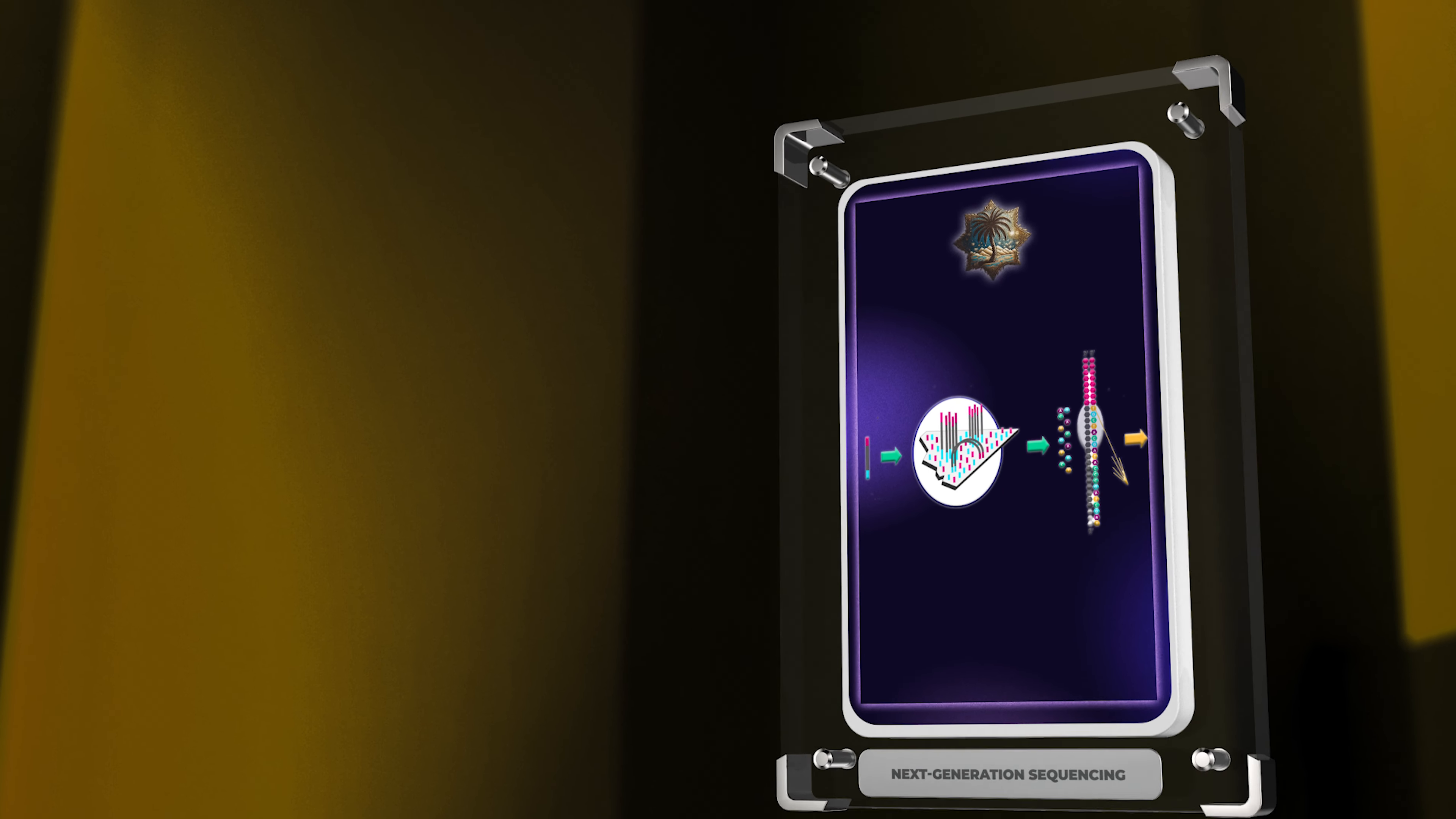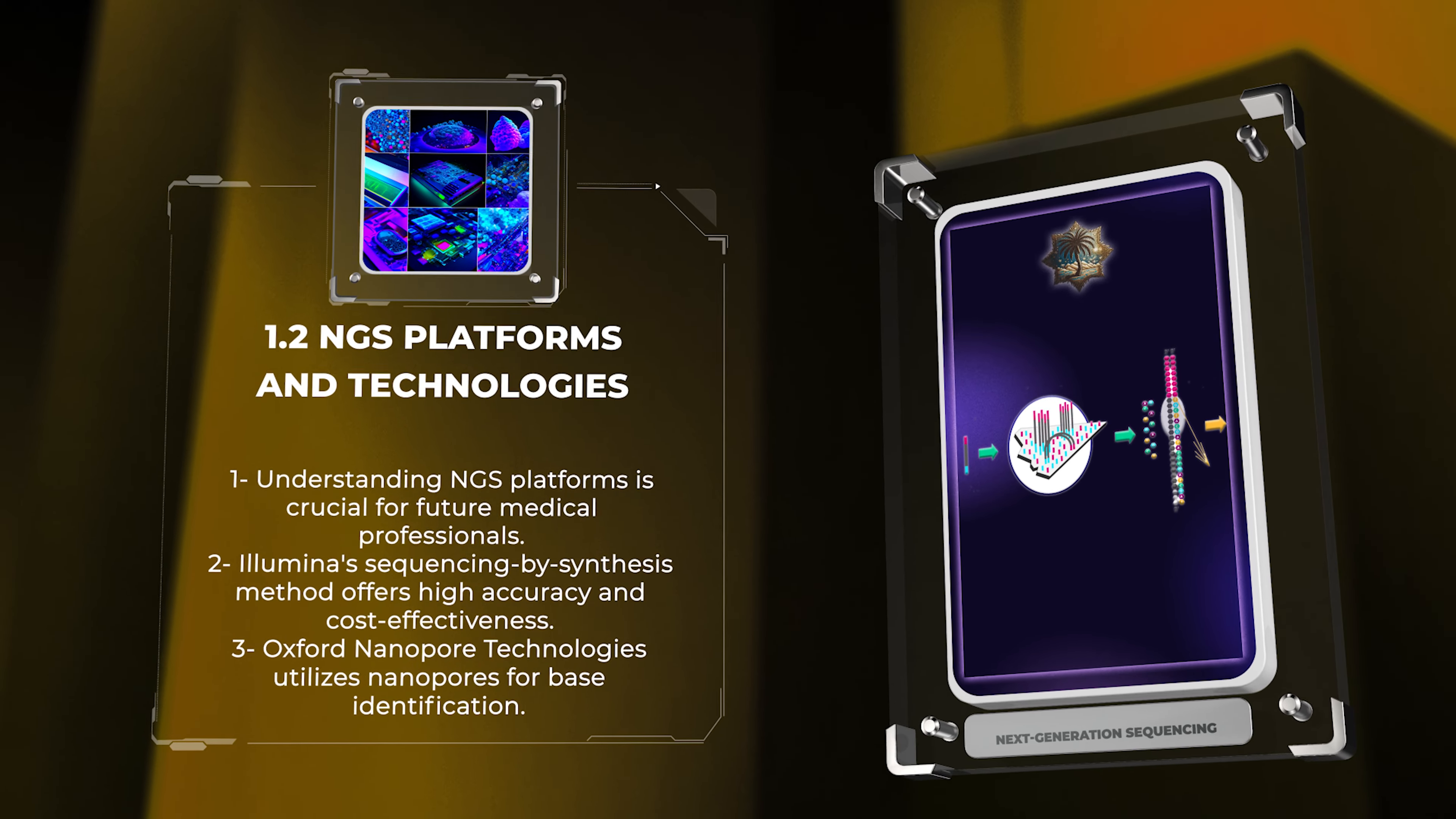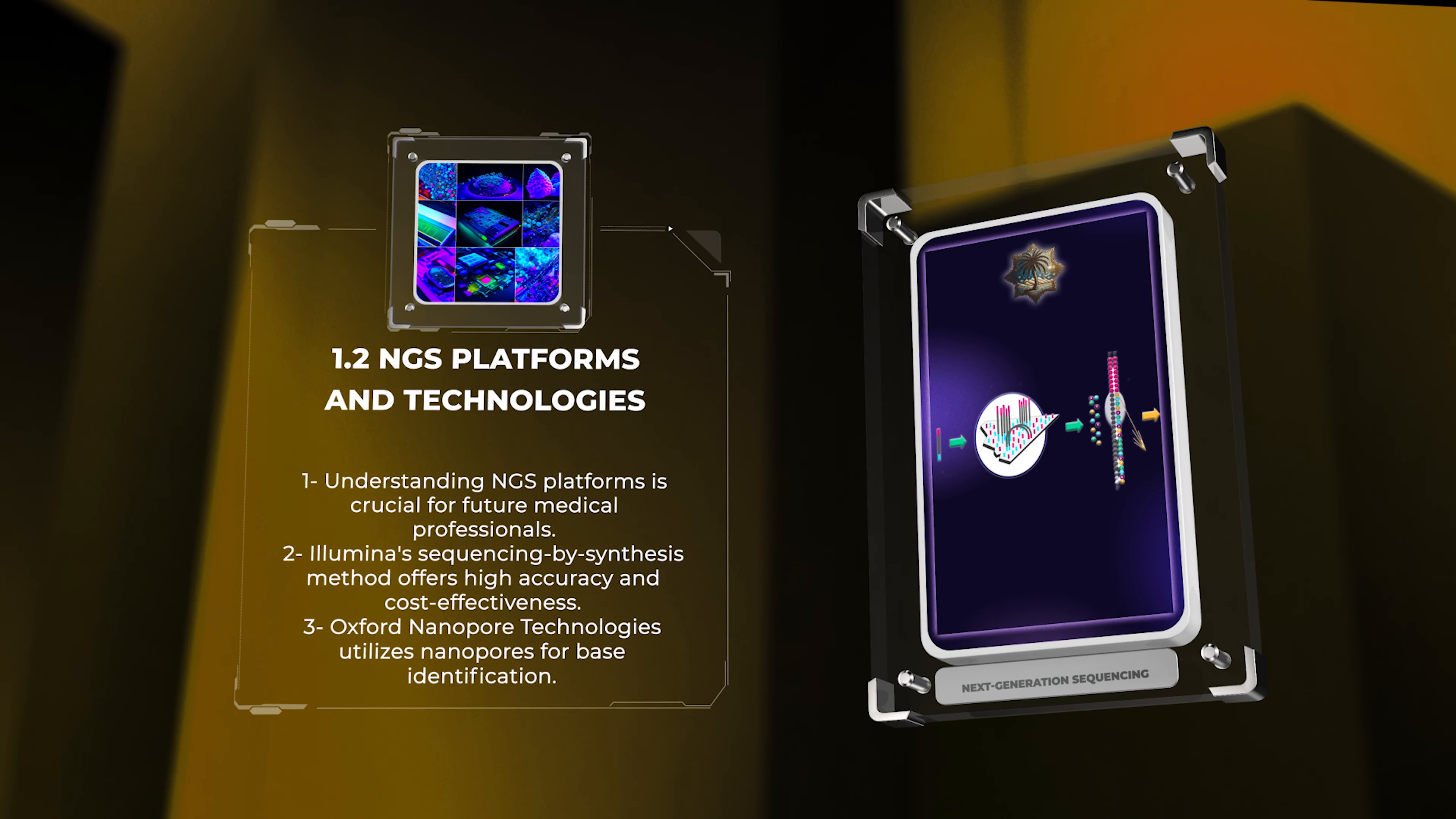Understanding the different NGS platforms is crucial for future medical professionals. Illumina's sequencing by synthesis method offers high accuracy and cost-effectiveness, while Oxford Nanopore Technologies utilizes nanopores for base identification.